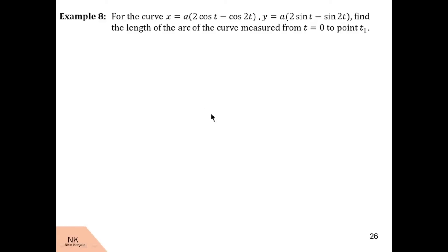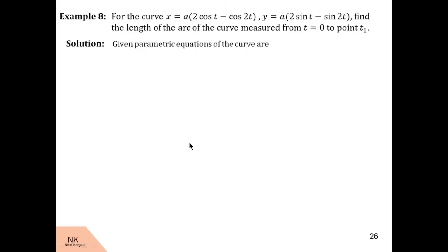Here we are asked to find the length of the curve given by x = a(2cos t − cos 2t) and y = a(2sin t − sin 2t) from t = 0 to t1. Let us first note down these parametric equations of the curve and then find their derivatives.